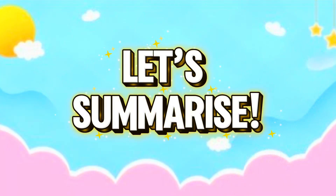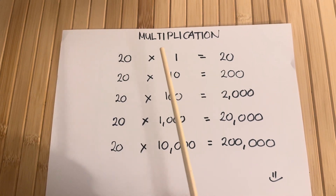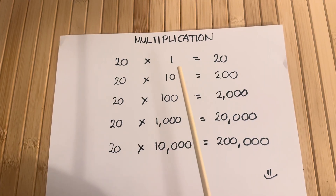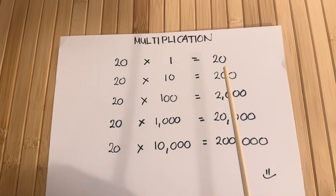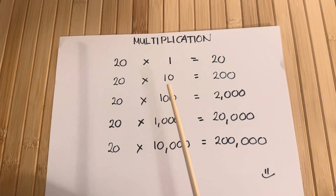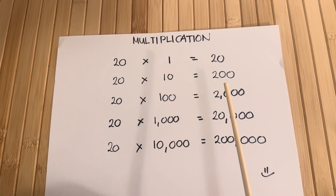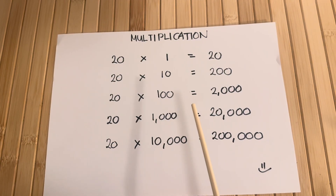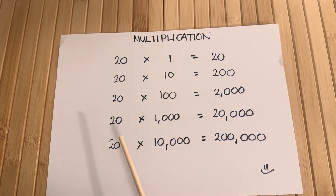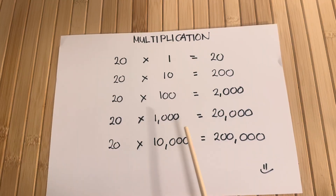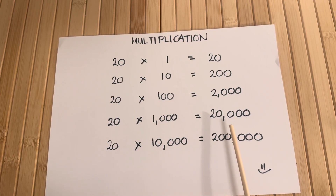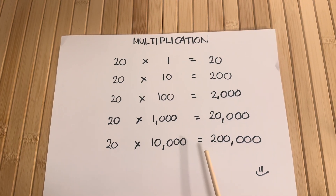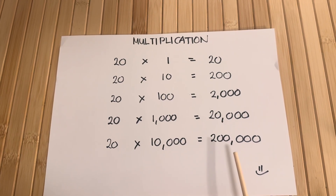Let's summarize. 20 times 1 is equals to 20. 20 times 10 is equals to 200. 20 times 100 is equals to 2,000. 20 times 1,000 is equals to 20,000. 20 times 10,000 is equals to 200,000.